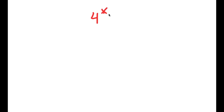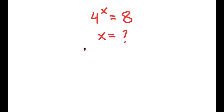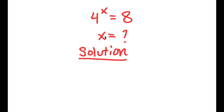So in this problem, I have 4 to the power of x is equal to 8. Obviously here I want to find the value of x. For my solution, I'll first start by rewriting the problem: 4 to the power of x is equal to 8.